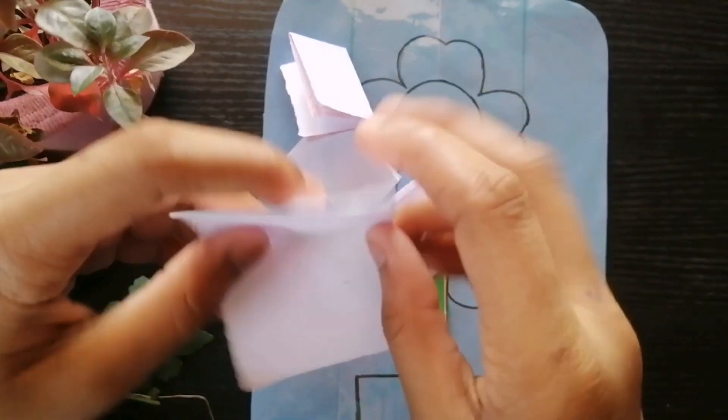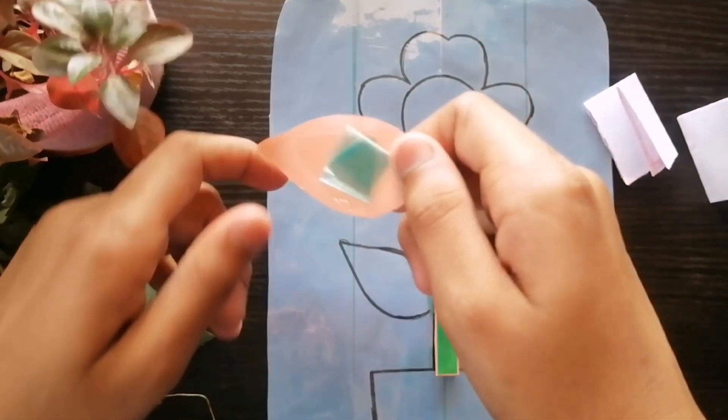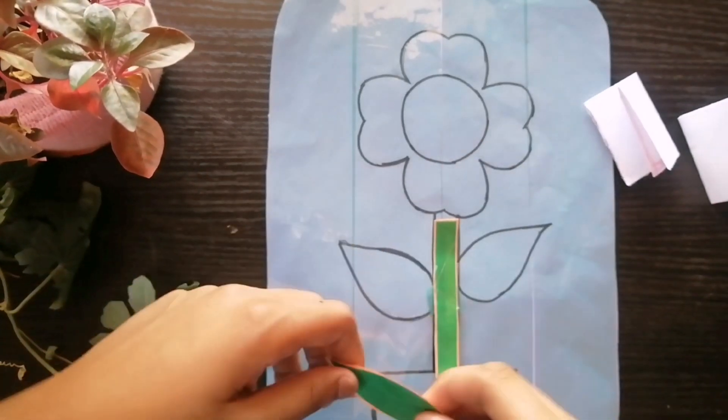Leaves, these are the flat and green parts of the plant that grow out of the stem.